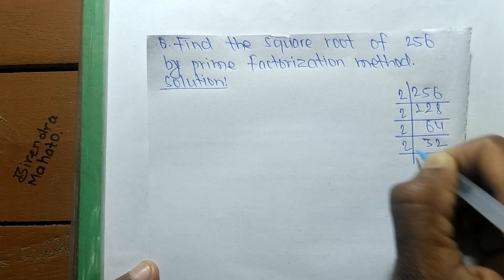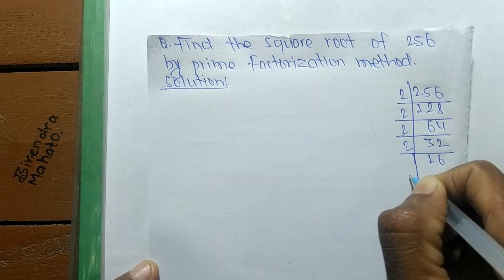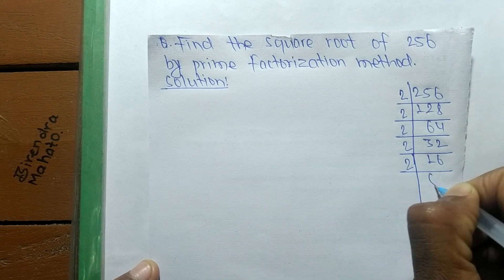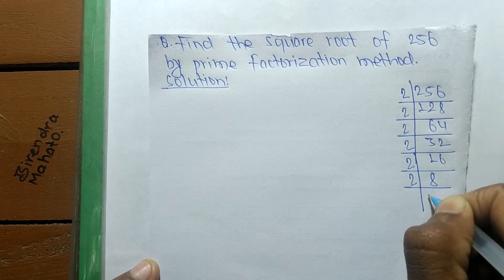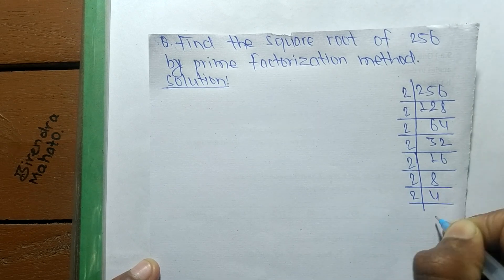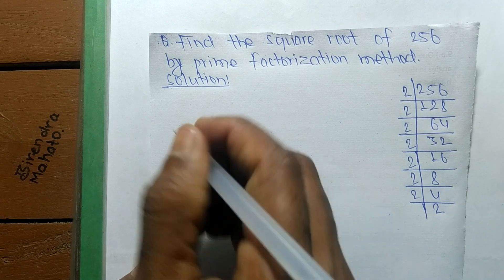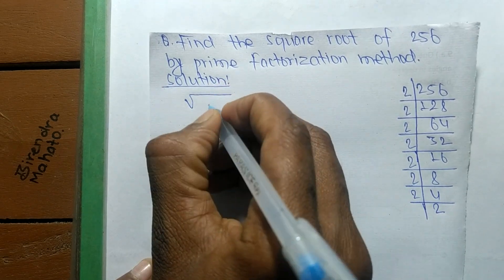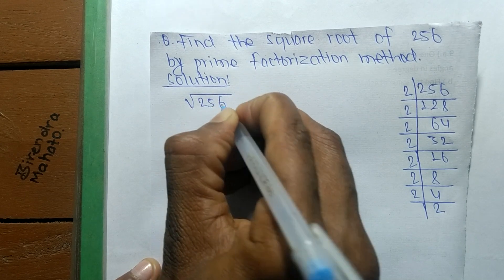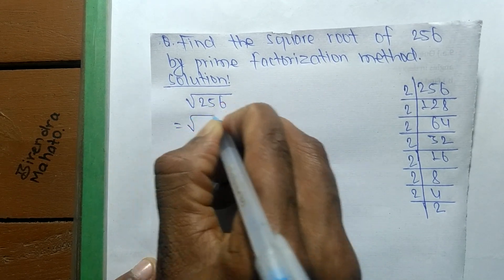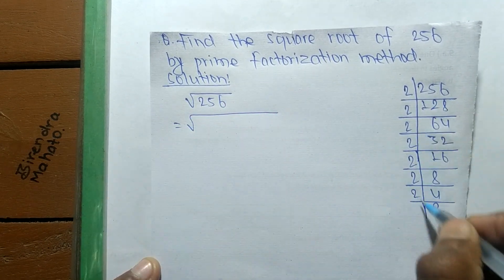32, 2 times 16, 2 times 8, 2 times 4, and 2 times 2. So after finding out the prime factors, now we find out the square root of 256, which is equal to, from these prime factors...